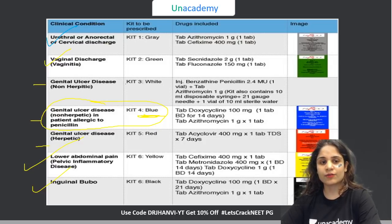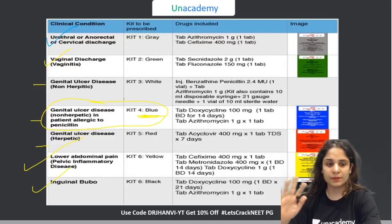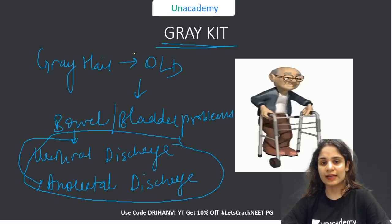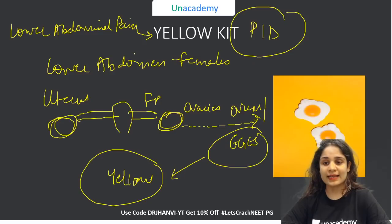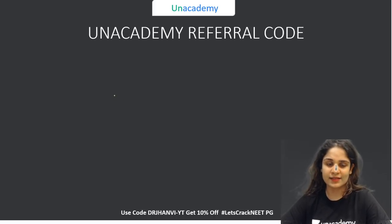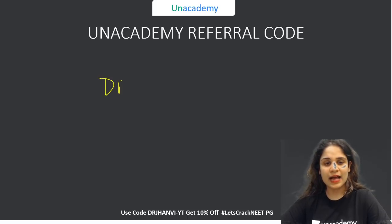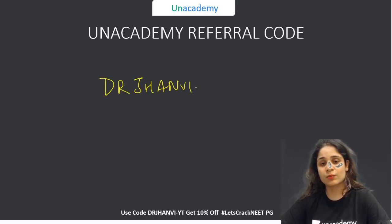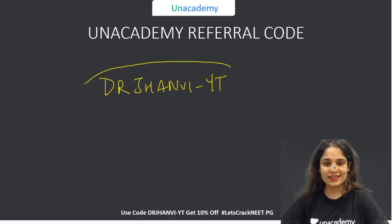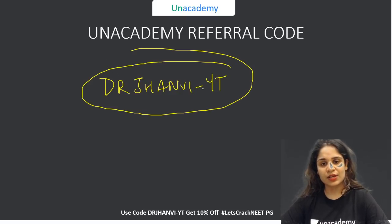To summarize all STI kits: gray kit for urethral or anorectal discharge, green kit for vaginal discharge, white kit for non-herpetic genital ulcer, red kit for herpetic genital ulcer, blue kit for non-herpetic ulcer with penicillin allergy, yellow kit for lower abdominal pain (PID), and black kit for inguinal bubo. I hope these colors will stick with you forever and you'll mark all correct answers in your exam.